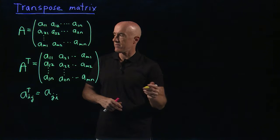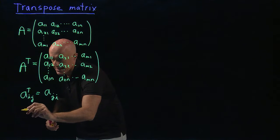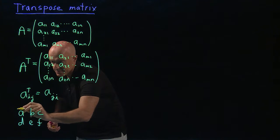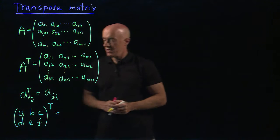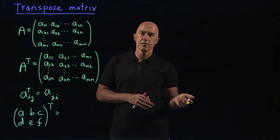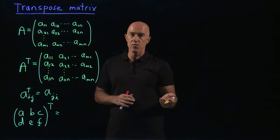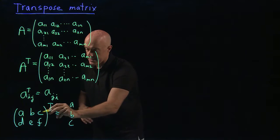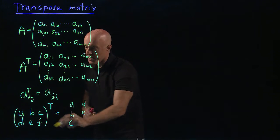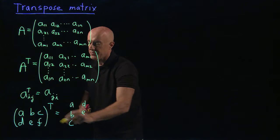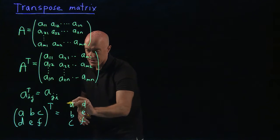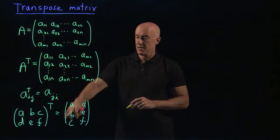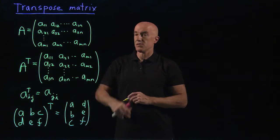It's nice to look at a simple example. If we look at the matrix [A, B, C; D, E, F] and take the transpose, this is two rows and three columns. It becomes a matrix which is three rows and two columns. The first row A, B, C becomes the first column, and D, E, F the second row becomes the second column. So the two-by-three matrix becomes a three-by-two matrix.